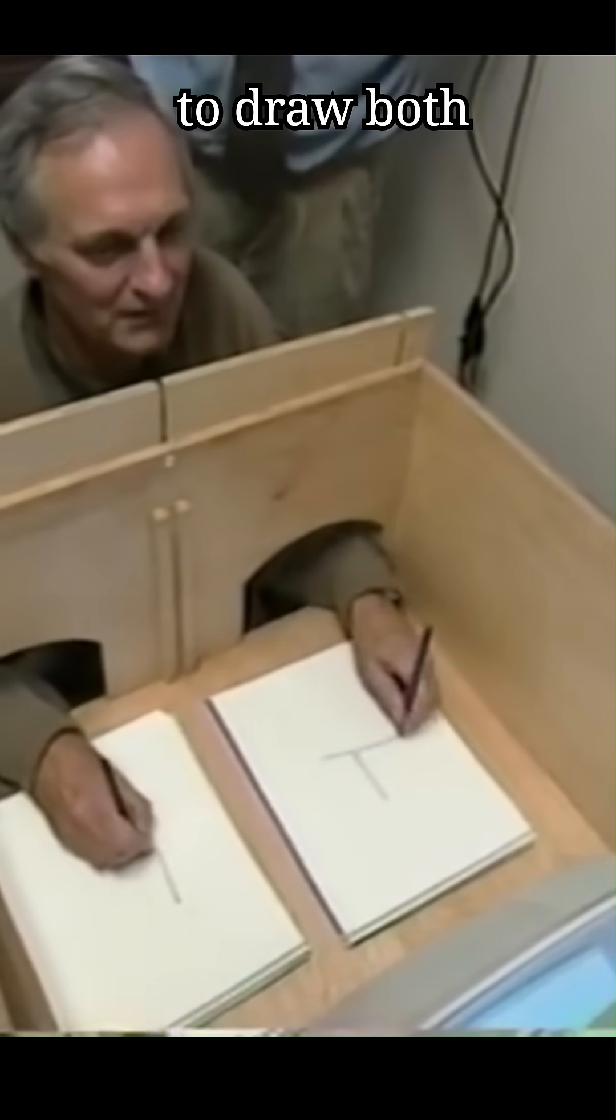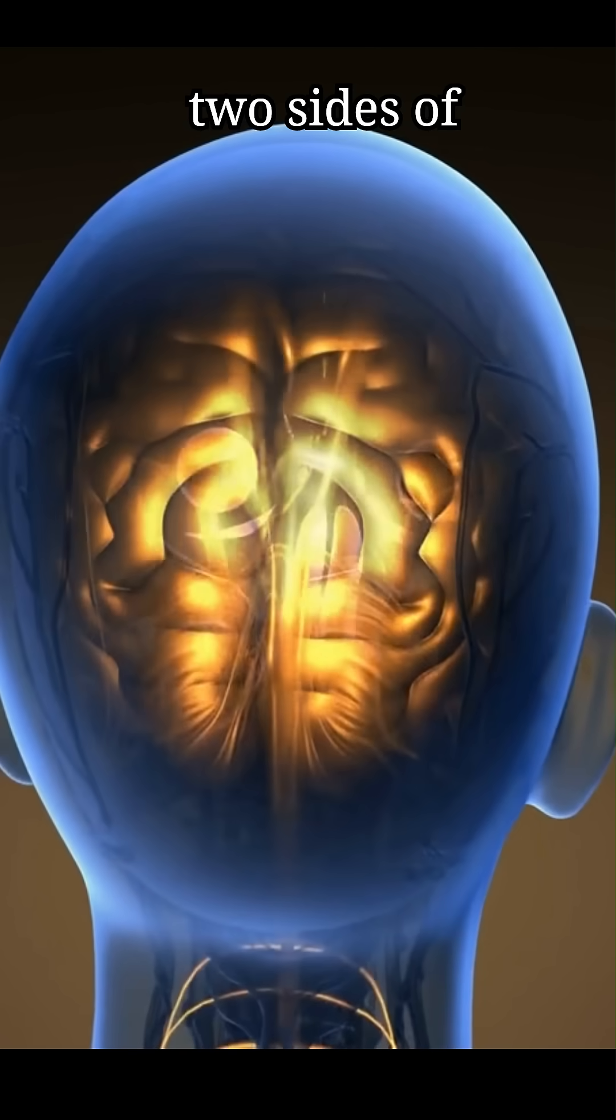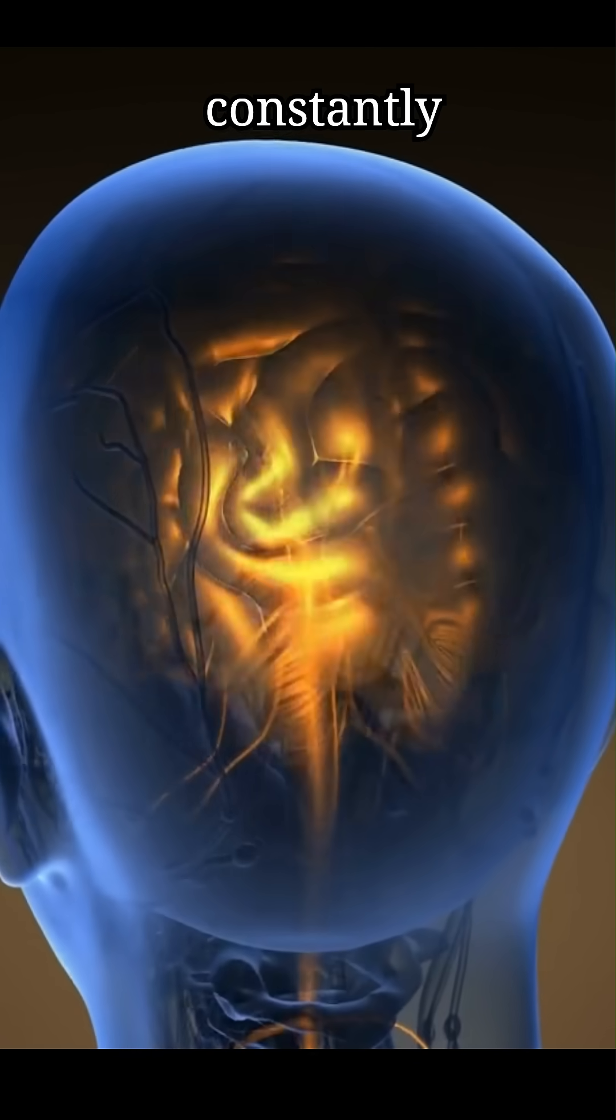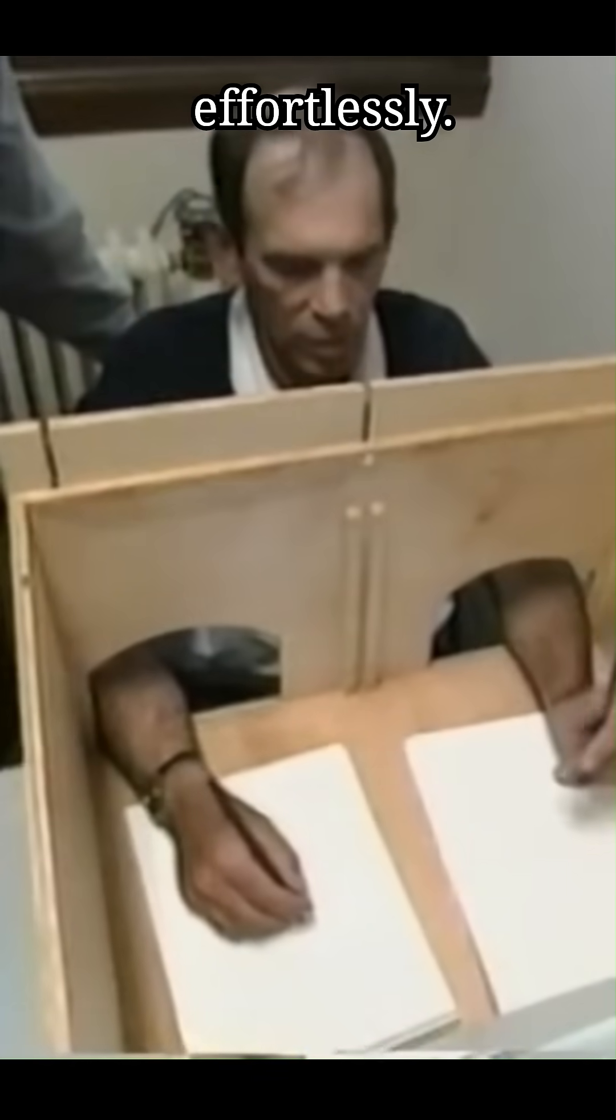A normal person would struggle to draw both shapes simultaneously with both hands. That is because the two sides of the brain are constantly interacting, interfering with each other. But a split brain patient can do it effortlessly.